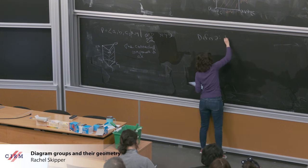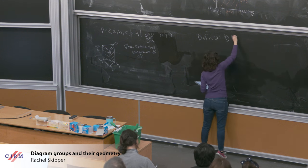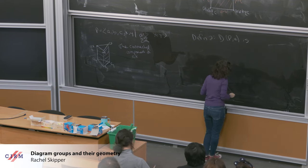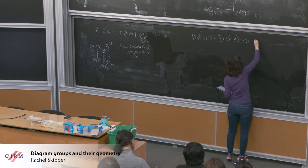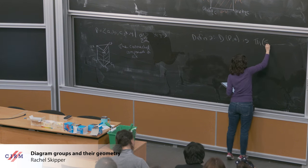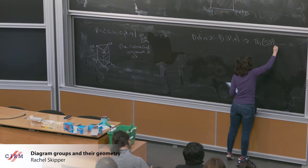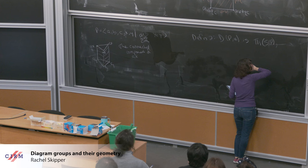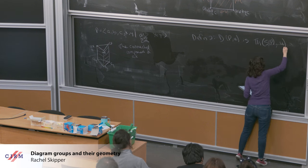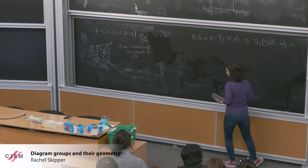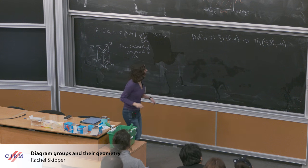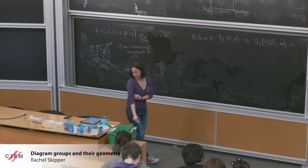So now we can define our second definition of diagram groups: the diagram group D(P, U) is π₁ of the square complex SF(P) based at the word U — it is the fundamental group of this complex.